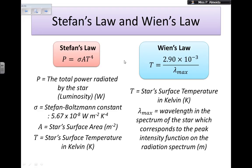Again, lambda maximum is the wavelength in the spectrum of the star which corresponds to the peak intensity function of the radiation spectrum in meters, because I use 10 to the power of minus 3. So this fancy wording just means the color of the star.